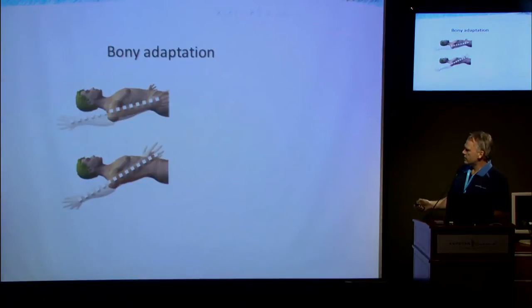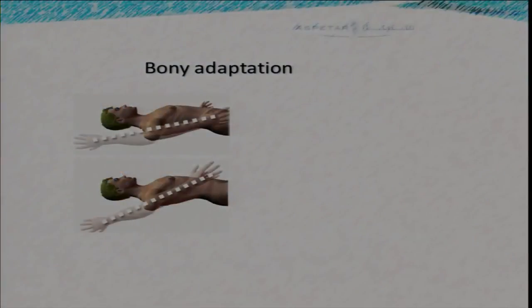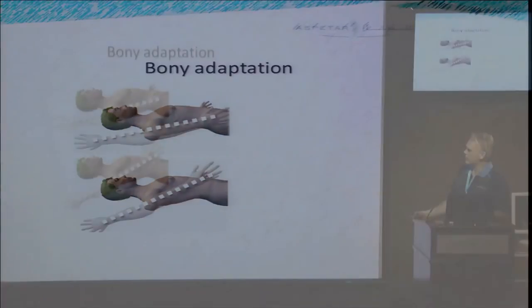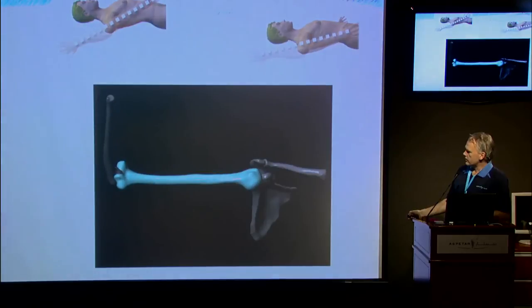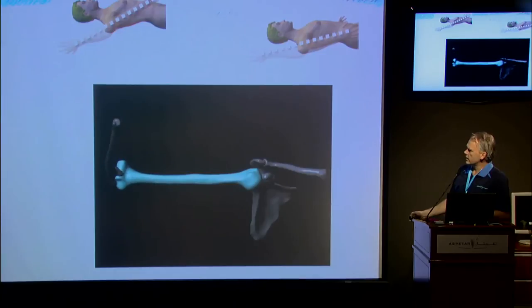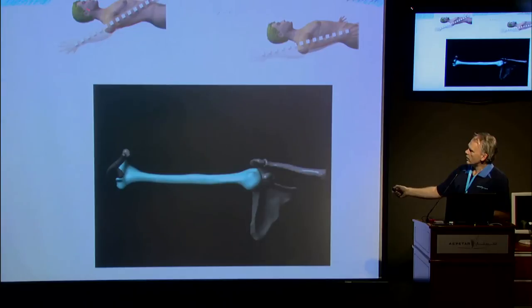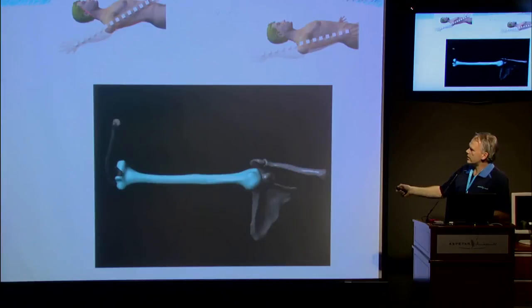Bony adaptation is a significant driver of change in rotational range of motion. The amount of twist about the long axis of the humerus — humeral torsion — varies from arm to arm and from subject to subject. If the humerus is more backwards-twisted, you'll have more external rotation but at the expense of internal rotation, while the total rotational range stays the same. This is the difference between a retro-torsed and an anti-torsed humerus.